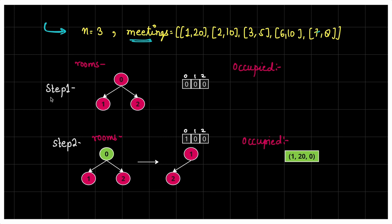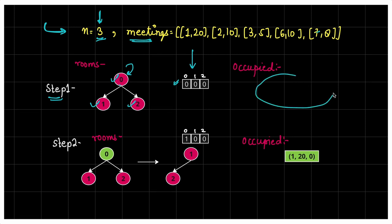Initialization phase: we create a min heap of available rooms — initially all rooms 0, 1, 2 are available. We also create a count array of size 3 initialized to 0,0,0 to track how many meetings each room holds. We also create a priority queue for occupied rooms with the custom comparator: if end times are equal, sort by room number; otherwise sort by end time.